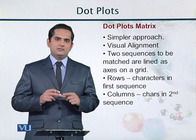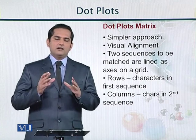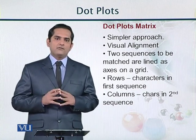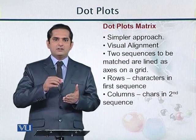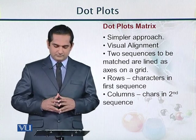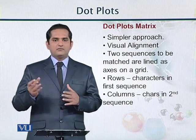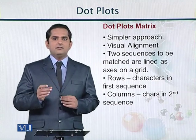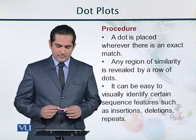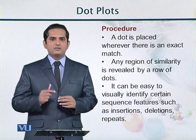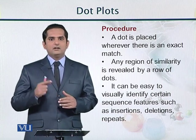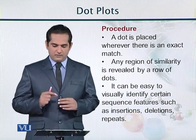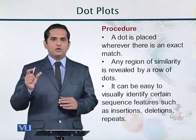We now have both sequences on two coordinates. If characters are common, we put a dot at their corresponding position. The graph shows x and y directions, and common points appear inside the graph. Rows contain characters of the first sequence and columns contain characters of the second sequence. We make a grid and place dots where there is an exact match between characters.